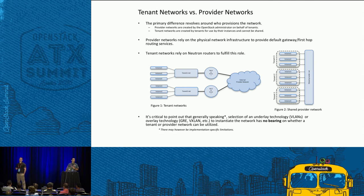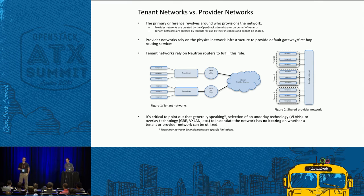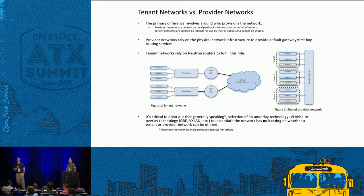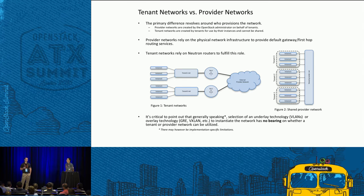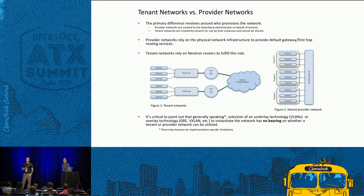The difference between provider networks and tenant networks is kind of built into the names — it revolves around who provisions the networks. With provider networks, the OpenStack administrator provisions those on behalf of the tenants, and can decide whether to dedicate the provider network to a single tenant, all tenants, or a subset. I want to call out a feature delivered in Liberty that I'm very excited about: role-based access control for networks. Before RBAC, it was all-or-nothing — you either shared with all tenants or a single tenant. Now we can share a network with a subset of tenants.